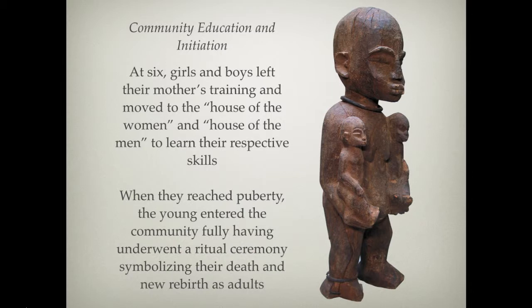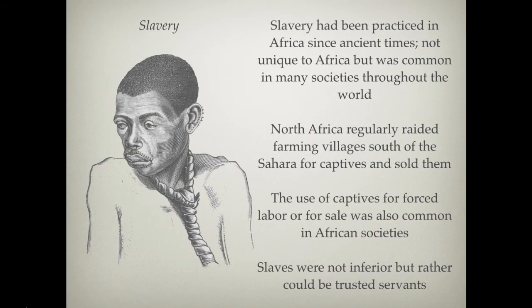When they reached puberty, young people entered into the community as full-fledged members. They would go through ritual ceremony, symbolizing their death and rebirth as adults — which is what we see in most rites of passage, a passage from adolescence into adulthood. By the time they hit puberty, they were considered men and women, which is a completely different notion than our modern ideals.